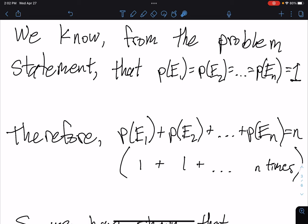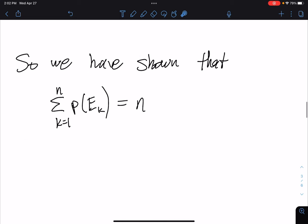Therefore, if we're going to add all these together, we really are just doing 1 plus 1 plus 1, N times, which is going to give us a total sum of N. So we have shown that this sum of probability of E1 up to probability of EN is just equal to N itself.